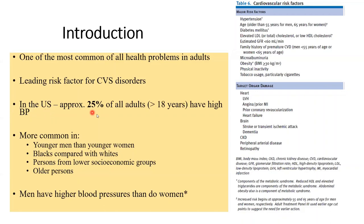In the U.S., for example, approximately 25 percent of all adults above the age of 18 have high blood pressure. That's a very significant number — 25 in 100 people in the U.S., according to the latest statistics, suffer from some sort of blood pressure abnormality, and this is a serious concern.